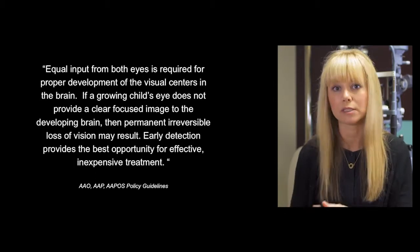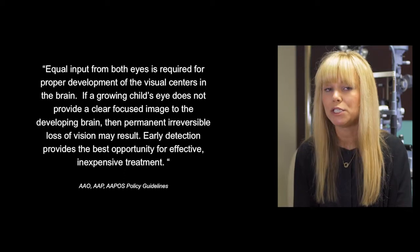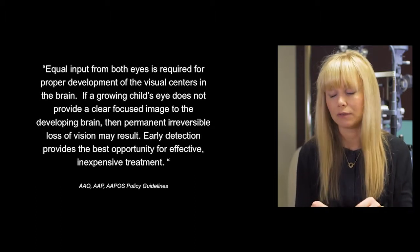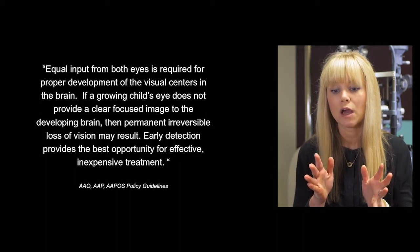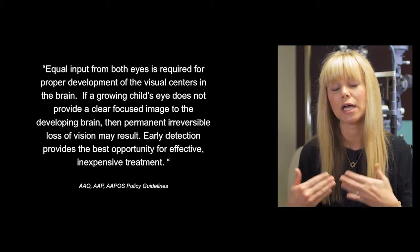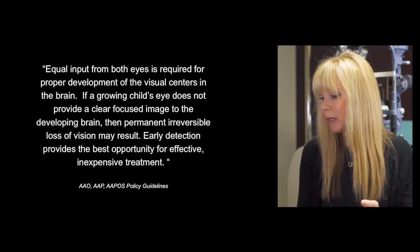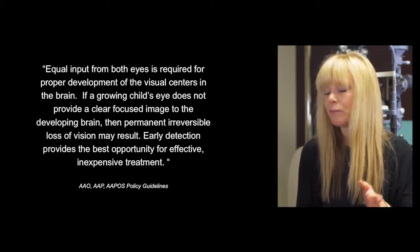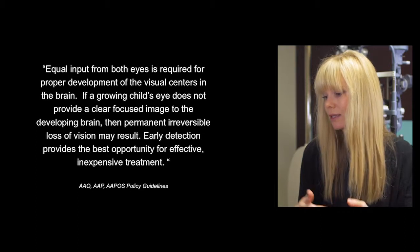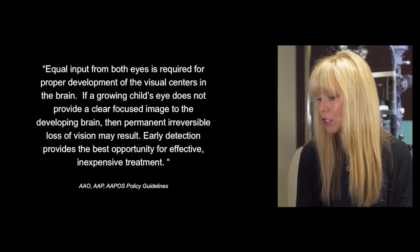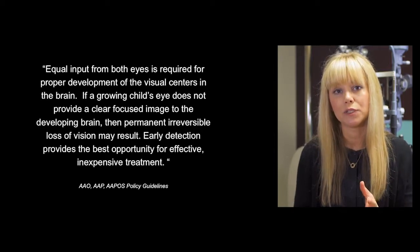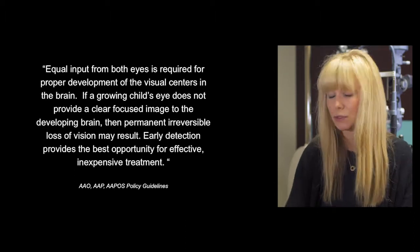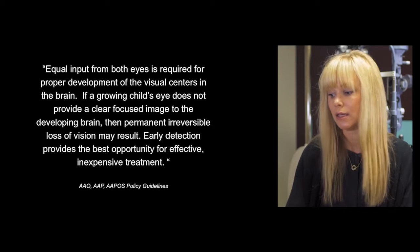We do this because it's a very important parameter for normal visual development. We're most interested in whether the eyes are equally performing, with no preference of one eye over the other. If a growing child's eye does not provide a clear focused image to the developing brain, that can result in permanent, irreversible vision loss that extends into adulthood. So when we test each eye individually, we're asking whether the child uses each eye equally and therefore has normal visual development.